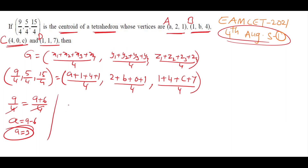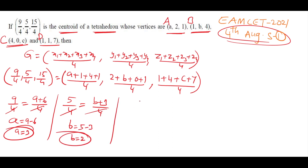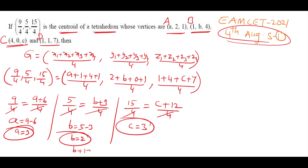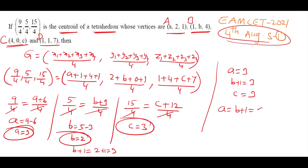Equating y-coordinates: 5/4 = (1+b+0+1)/4 = (b+2)/4, wait — (2+b+0+1)/4 = (b+3)/4, so b = 5 - 3 = 2. Equating z-coordinates: 15/4 = (1+4+c+7)/4 = (c+12)/4, so c = 15 - 12 = 3. Now a = 3, b = 2, c = 3. Adding 1 to b: b + 1 = 3. Therefore the relation is a = b + 1 = c.